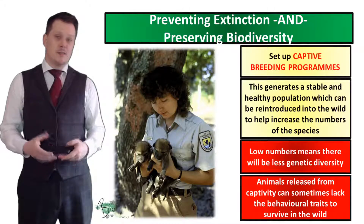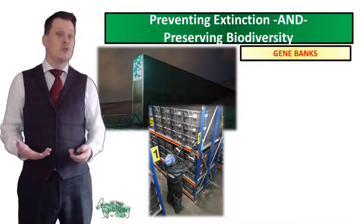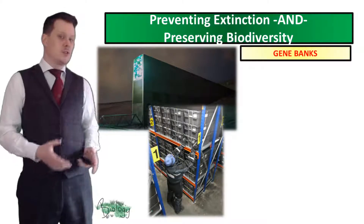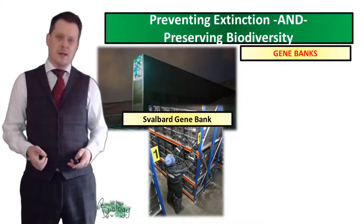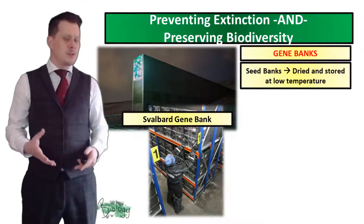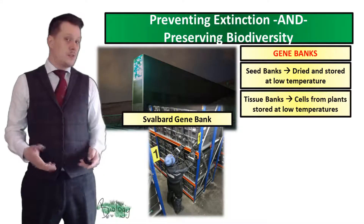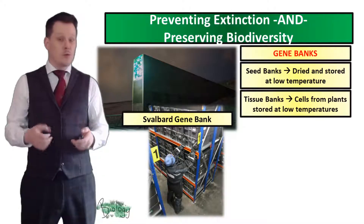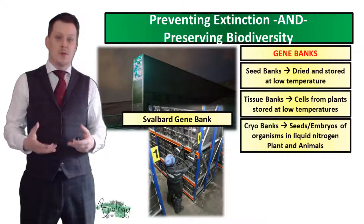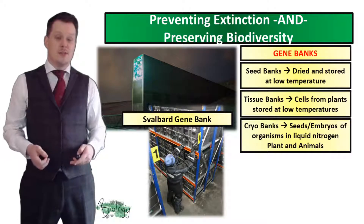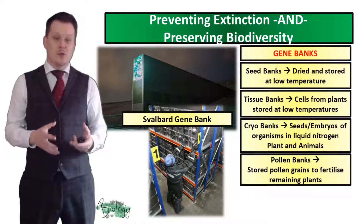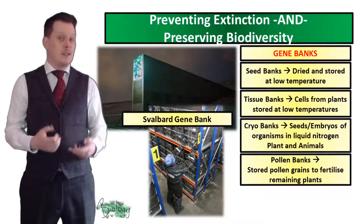We can also prevent extinction and preserve biodiversity using gene banks — such as the Svalbard gene bank — which is more focused on plants. These contain seeds dried and stored at very low temperatures so they can survive for a long period of time. They also contain tissue banks with cells from plants stored at low temperatures, cryobanks where seeds and embryos are stored in liquid nitrogen (including both plants and animals), and pollen banks where stored pollen grains help fertilise remaining plants.